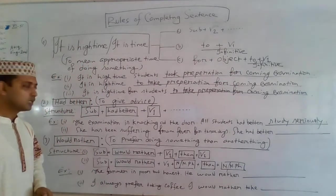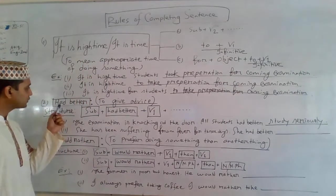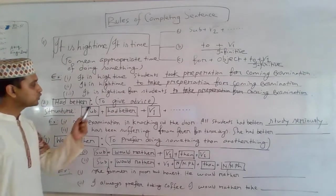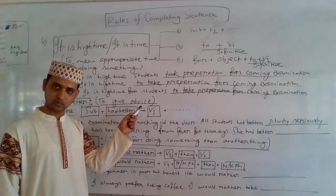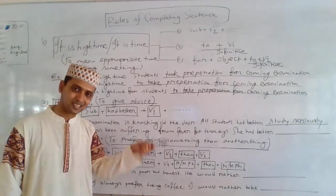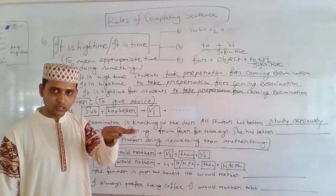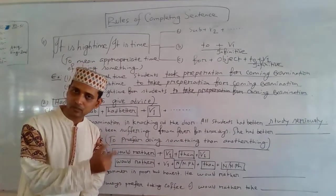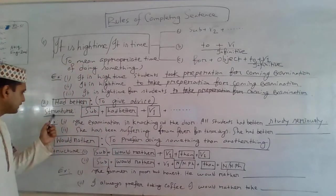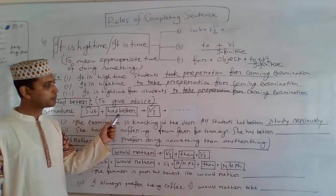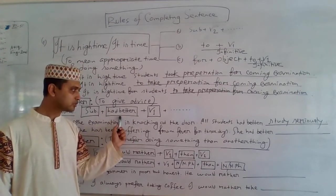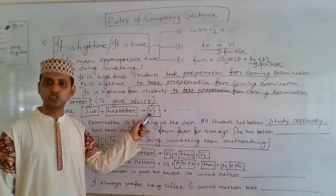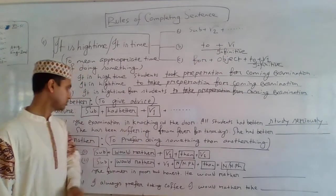Dear students, let's concentrate on the second one. Our second construction is 'had better.' 'Had better' is a modal verb used to give advice. The structure is: Subject + had better + V1. After 'had better,' we use V1 — the base form of the verb.